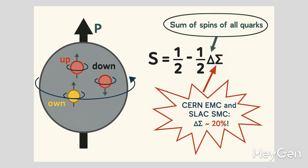This proton spin crisis lies in the fact that if we mathematically calculate the values associated with quarks — their spins — and compare them to what we observe in the proton as a whole, it turns out that we only account for 30% of the motion that actually exists in reality.